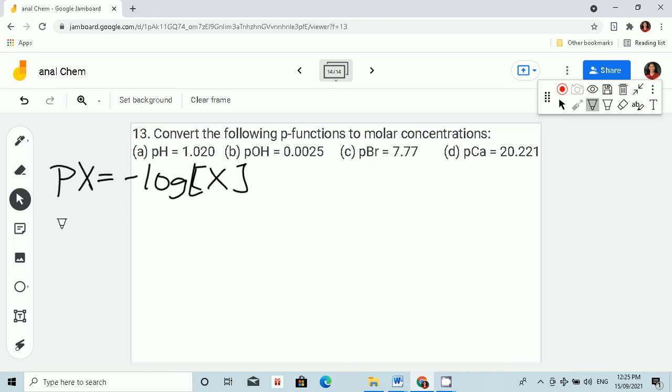If we have letter A, pH, so pH is equal to negative log of H plus. pH is given, so that is 1.020, and then negative log of concentration of H plus.